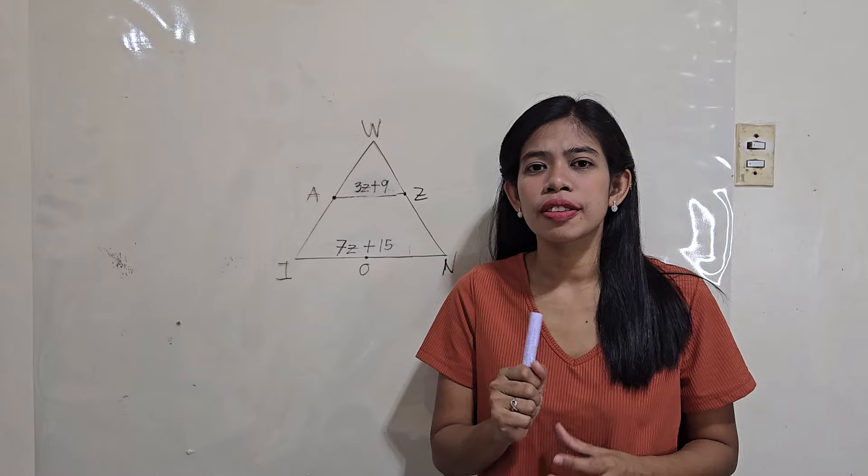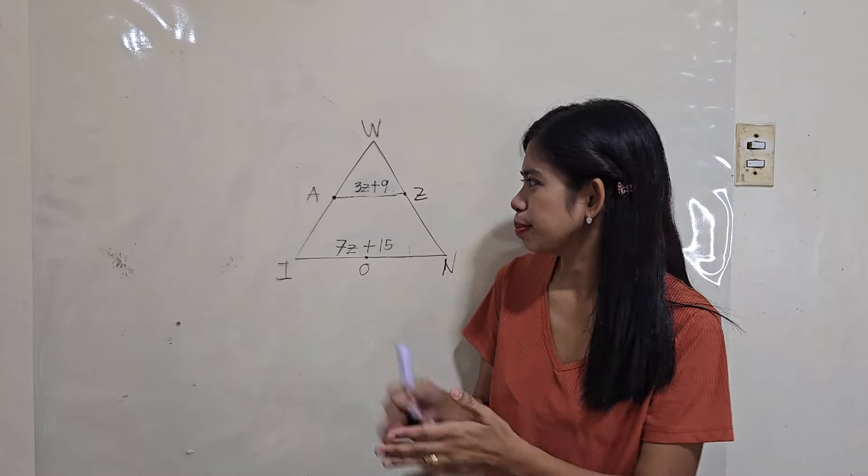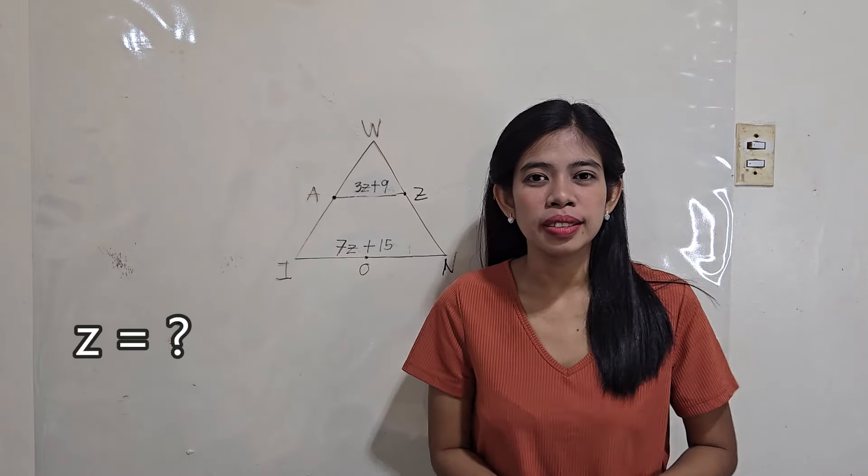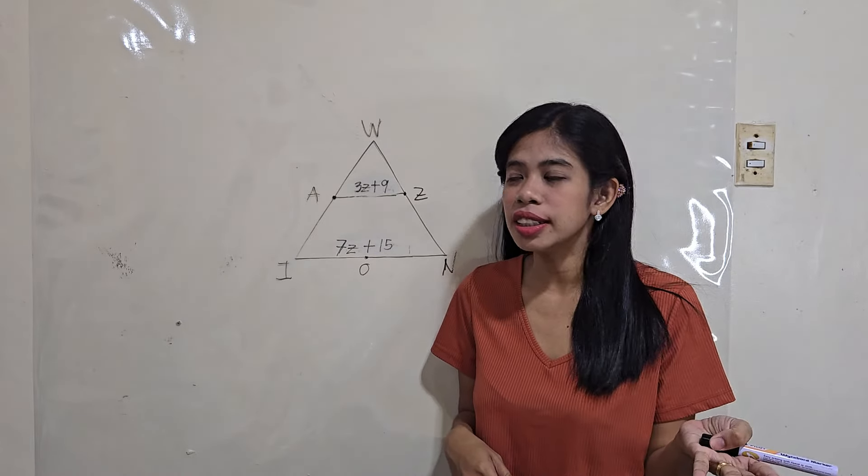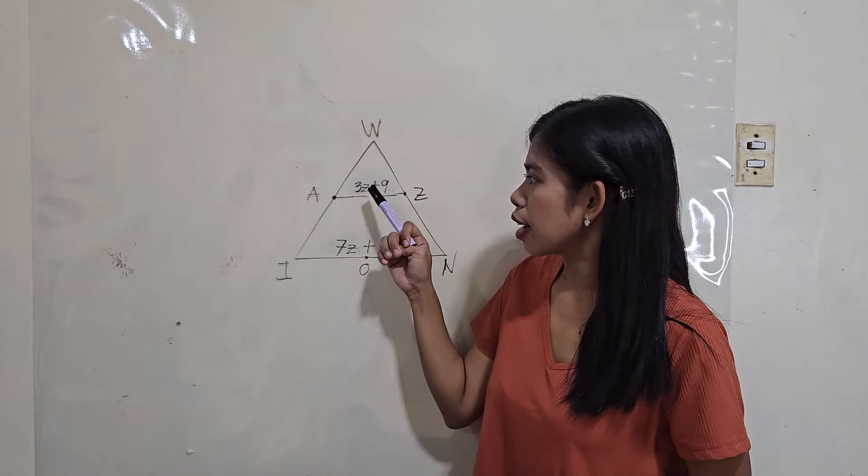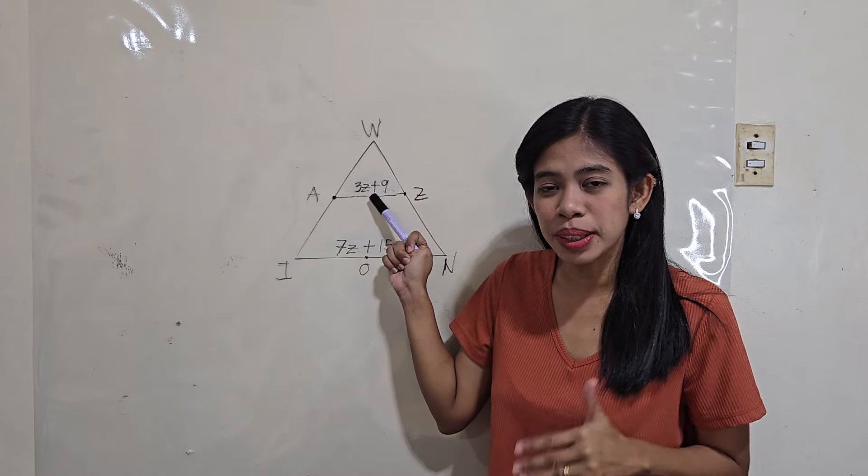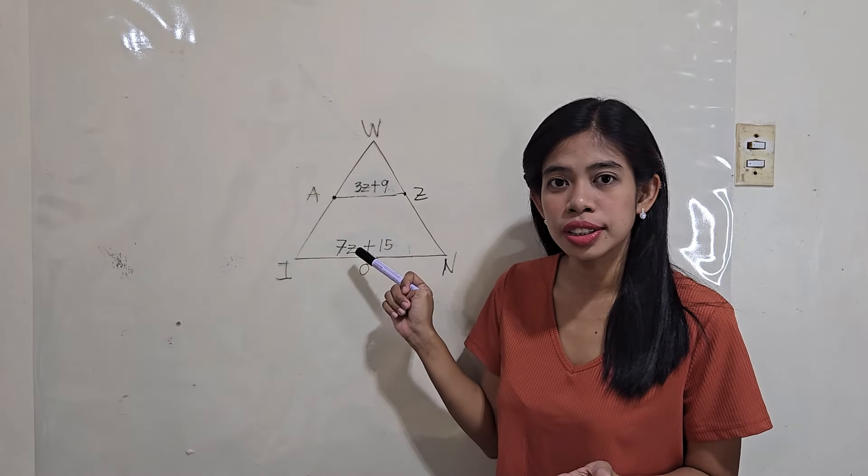Now, what if there are unknown quantities like Z, X, or Y? How do we find the value of Z this time? So, just like what we did earlier, we just have to double the measure of the midline to get the third side.